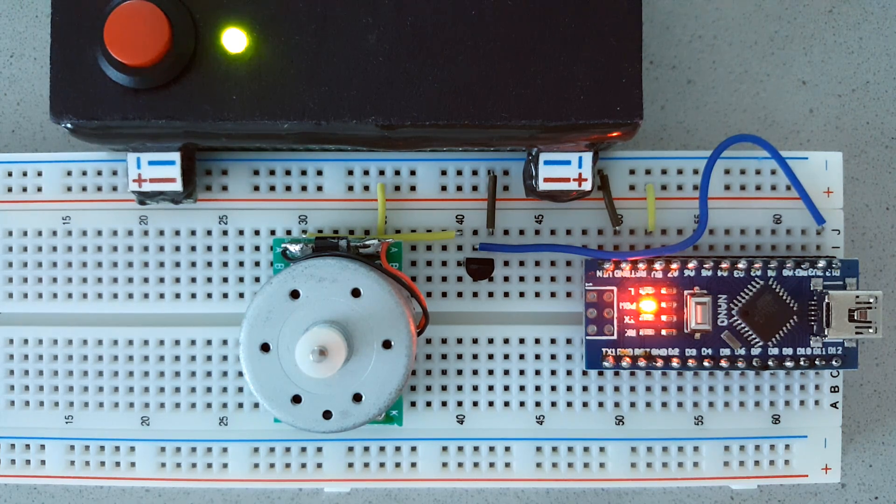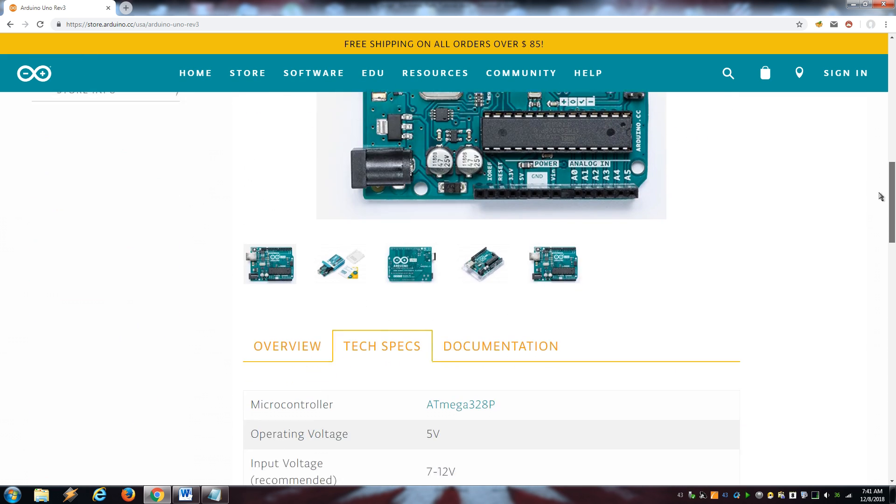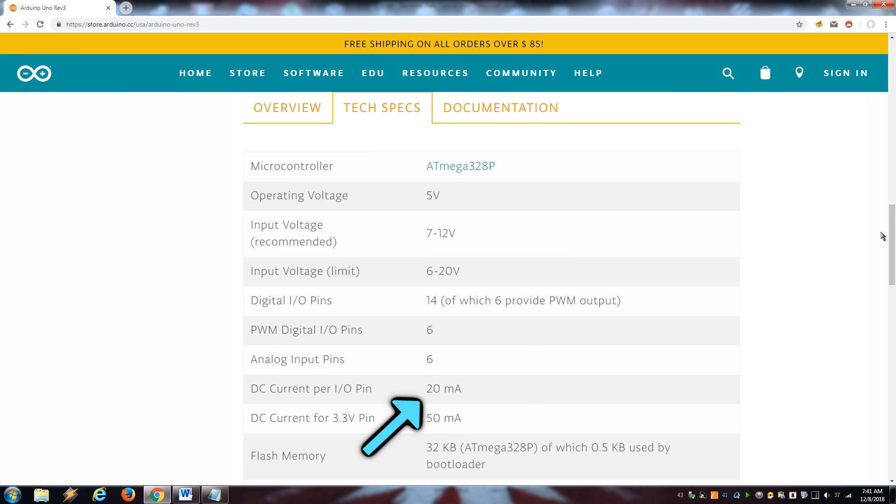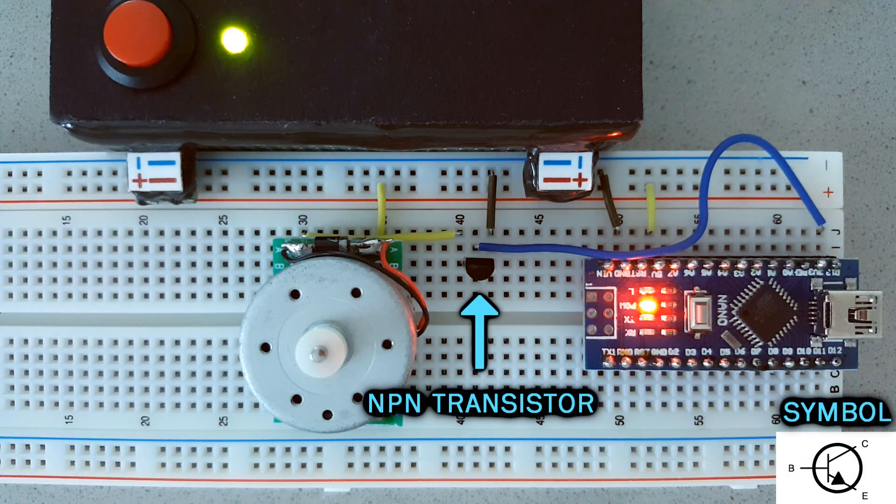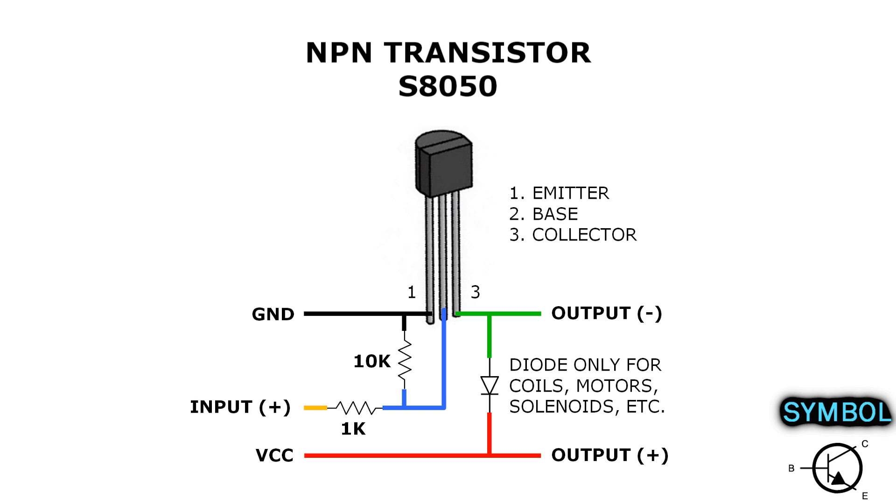Many times we need to control high current loads with microcontrollers and we have to put something in between to do the switching because microcontrollers usually can't handle more than 20mA. In these cases, we use transistors. They have three pins with the emitter connected to the power source, the base with the microcontroller and the collector with the load. If you want to control the negative side of the circuit, you have to use an NPN transistor, which will turn on if the base is high and turn off if the base is low.